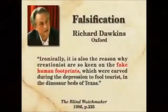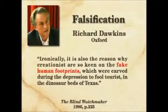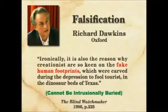Anytime you find bones, they are going to be declared intrusively buried — that's just the assumption. Dawkins goes on in his discussion of what would test and falsify evolution, saying ironically it is also the reason why creationists are so keen on the fake human footprints, which were carved during the Depression to fool tourists in the dinosaur beds of Texas. He's heard about our work at Glen Rose all the way from Oxford but refuses to come look, though he's sure they're fake. If they were real, this would falsify and utterly destroy evolution. And of course, you can't intrusionally bury footprints — they are where they are. You can't erode and redeposit them; they don't fall down cracks. So this is really better evidence than the bones, which Dawkins understands.